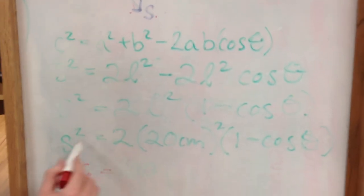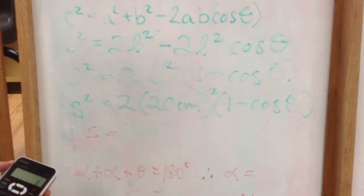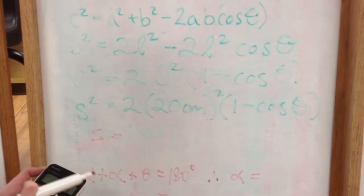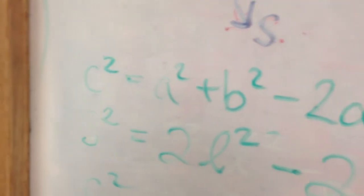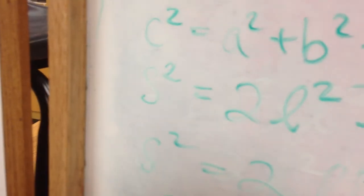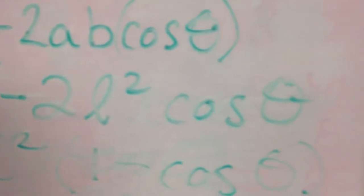So the cosine was... the angle was 9 degrees, so 1 minus cos9 times 400 times 2 square root of that. We have a side of 3.14 centimeters. The side length is 3.14 centimeters.